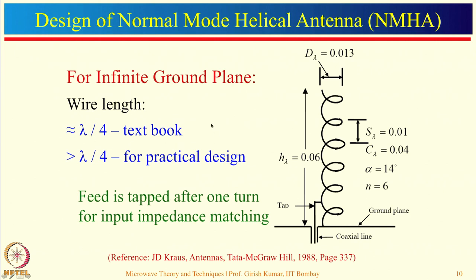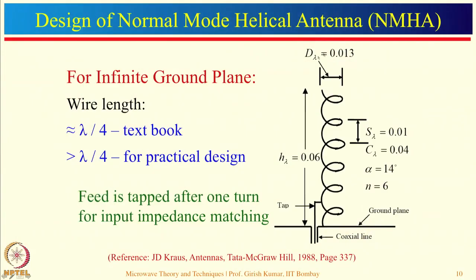This is a very approximate design. Also, the wire length taken as lambda/4 is a textbook design — for practical design, the wire length should always be greater than lambda/4. Whenever you bend a wire, the helical structure is also known as a slow wave structure, so the wave gets slowed down. Effectively it does not see the full lambda/4 electrical length, so you may need to take 0.3 or even 0.4 lambda. However, this is still true only for very large ground planes; for small ground planes the wire length may be as large as 3*lambda/4.